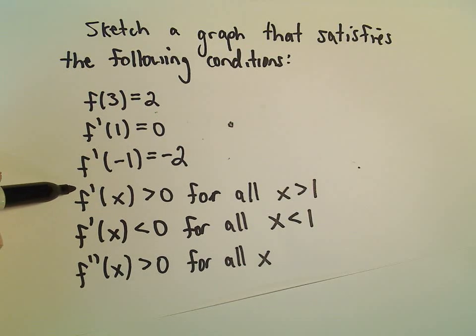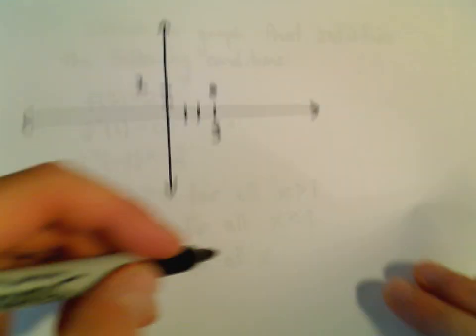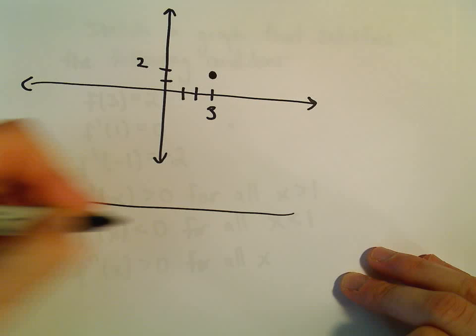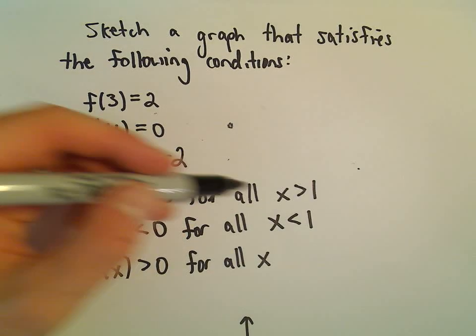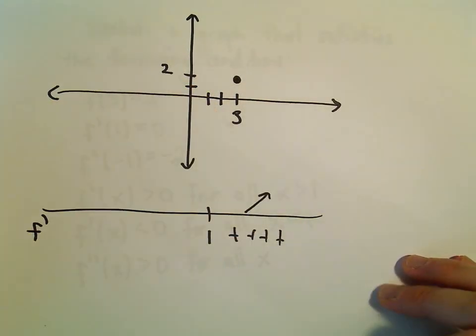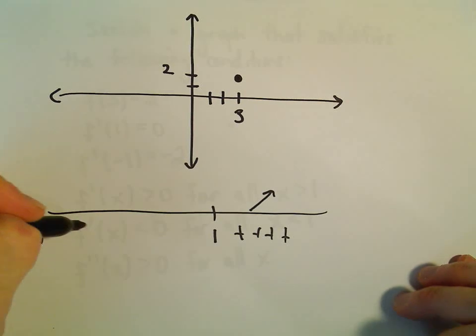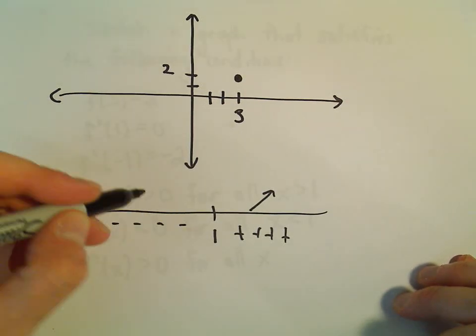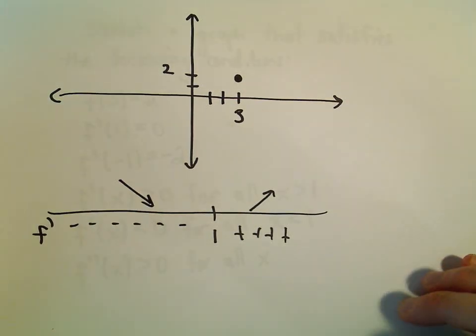Next I'll think about the first derivative. For all x coordinates greater than 1, the derivative is positive, which means the function is increasing. For all x coordinates less than 1, the derivative is negative, so the function is decreasing.